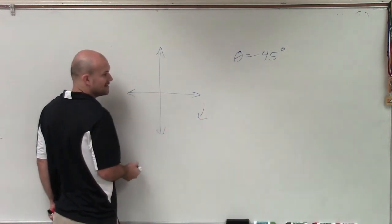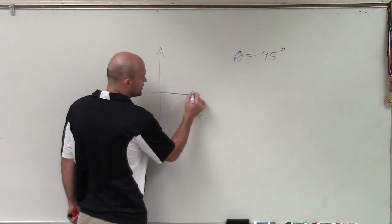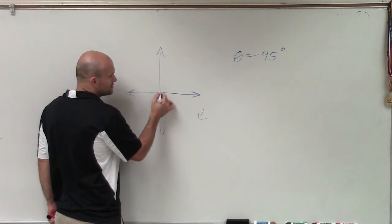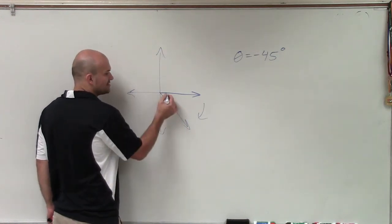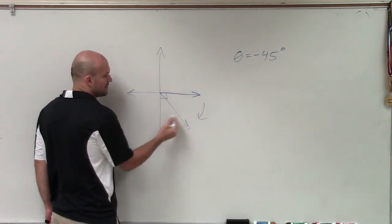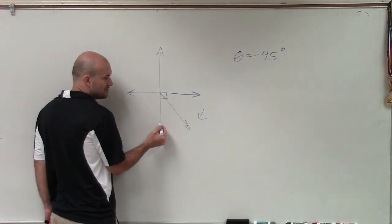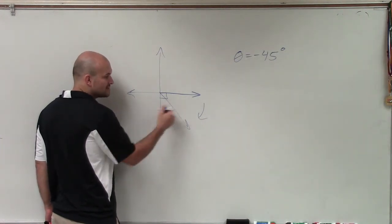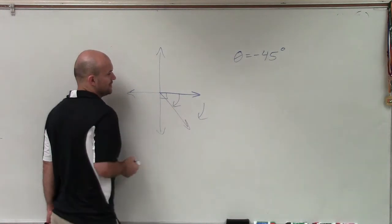Now we're taking an angle that's going to be in the negative direction. Remember, we start here, which is our initial side, and we're going to rotate a ray 45 degrees. I know that's 45 degrees because if I rotate my ray to this y-axis, that's going to be 90 degrees. So half of that would be 45 degrees. So I have this angle here,